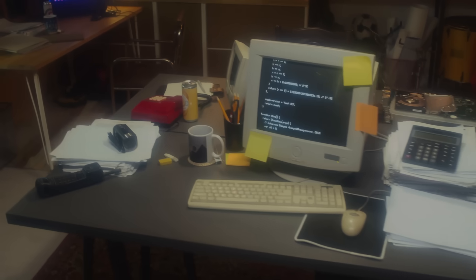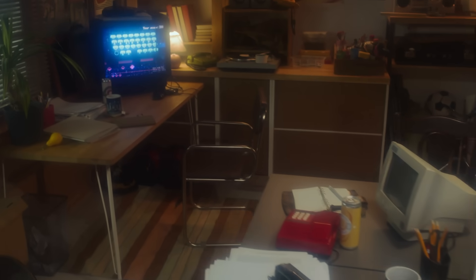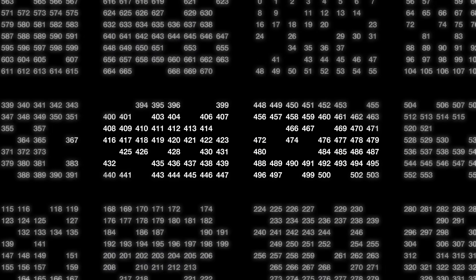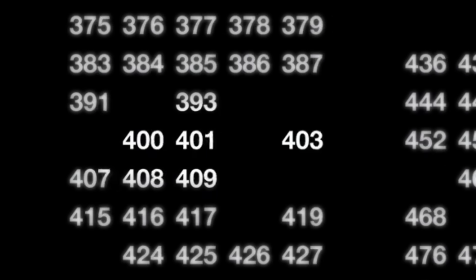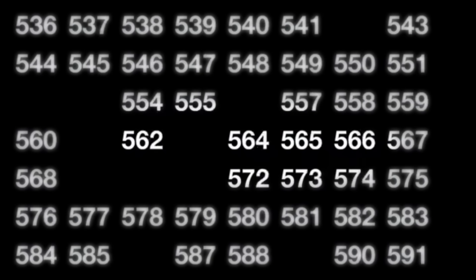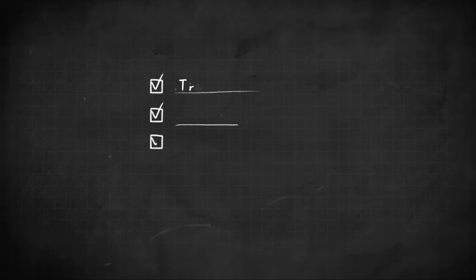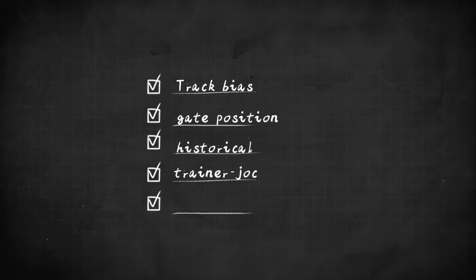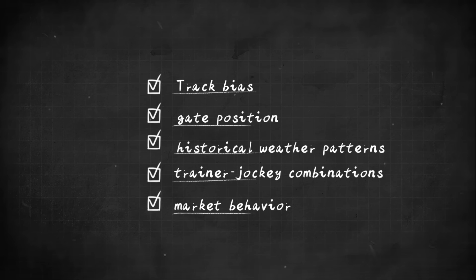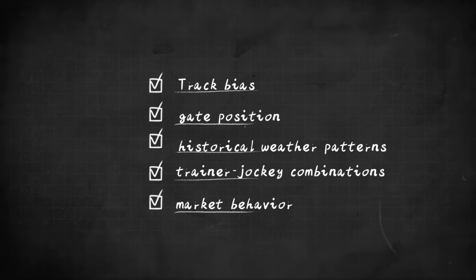After parting ways with Alan Woods, Bill Benter didn't expand. He refined. He took the original model, which had already made millions, and started from the ground up. Rebuilding it with more data, more accuracy, and more logic. His early system had relied on a few dozen variables. Now, he incorporated over a hundred. Track bias, gate position, historical weather patterns, trainer-jockey combinations, even market behavior.